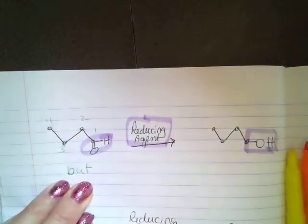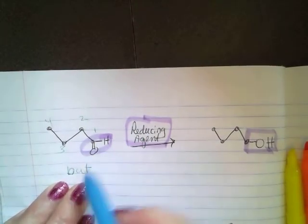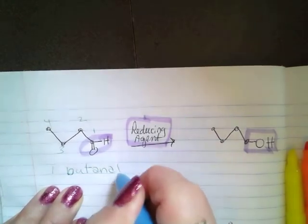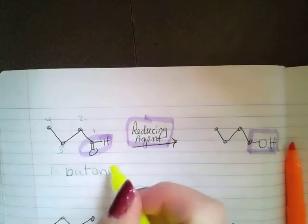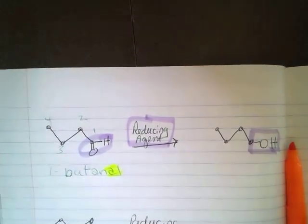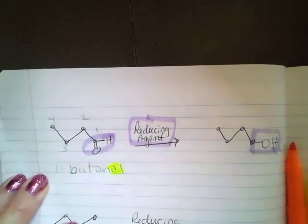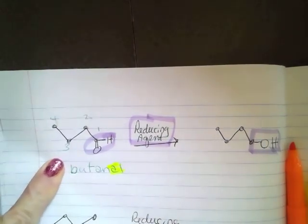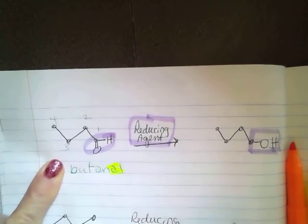The aldehyde group is at the end, so we don't have to worry about putting a 1-butan-al. Remember that is A-L, not O-L. 1-butan-al, but if you do put 1-butan-al that's fine, but we can just say butan-al because we know that it is at the end of that chain.